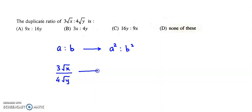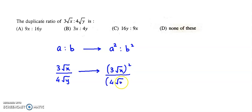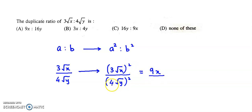Hence its duplicate ratio will be (3√x)² to (4√y)². Now 3² gives 9, and (√x)² gives x. In the denominator, 4² is 16 and (√y)² is y.